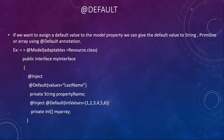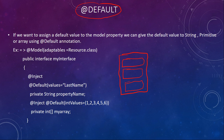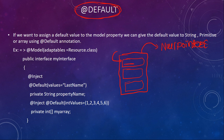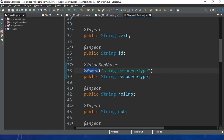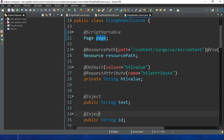Next is the @Default annotation. Consider a CQ dialog with fields like first name, last name, and age. Sometimes users don't fill in anything — these fields are empty. In that case, there is a chance the compiler throws a NullPointerException. To prevent that, they introduced the @Default annotation. You can add a default value to your field using this annotation.